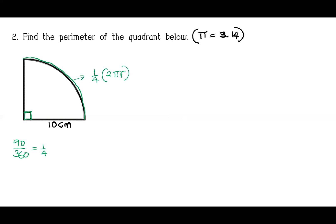The circumference of a whole circle is 2πr, so a quarter of 2πr. We calculate: (1/4) × 2 × 3.14 × 10. Simplifying: 2 ÷ 4 leaves 1/2, and 10 ÷ 2 = 5. So we get 3.14 × 5 = 15.7 centimeters. So here we have 15.7 centimeters.